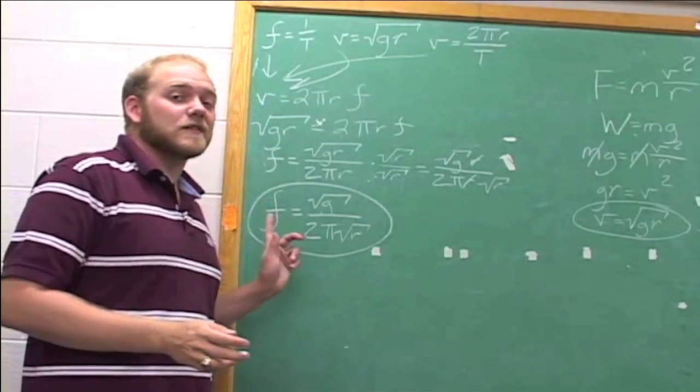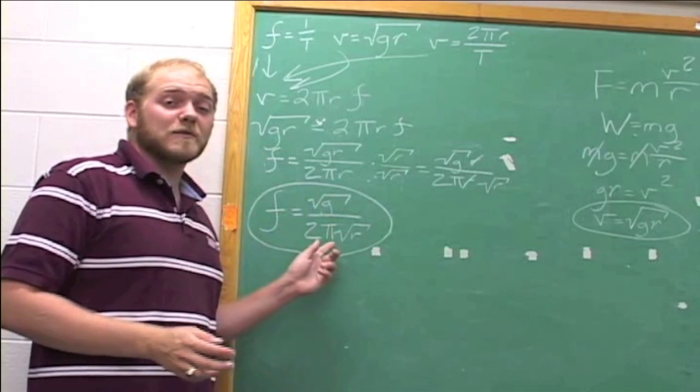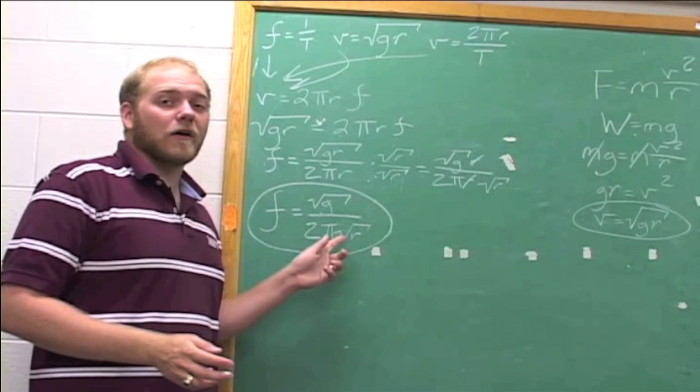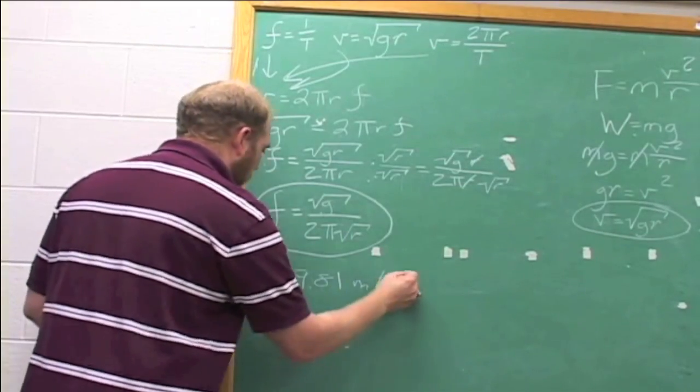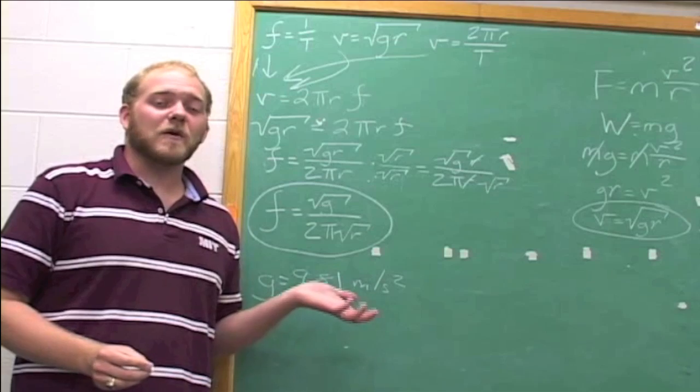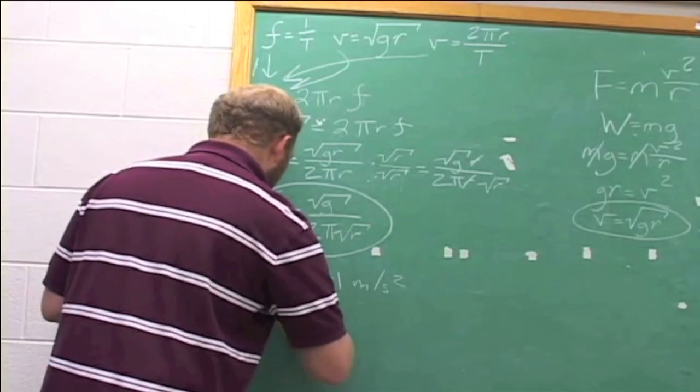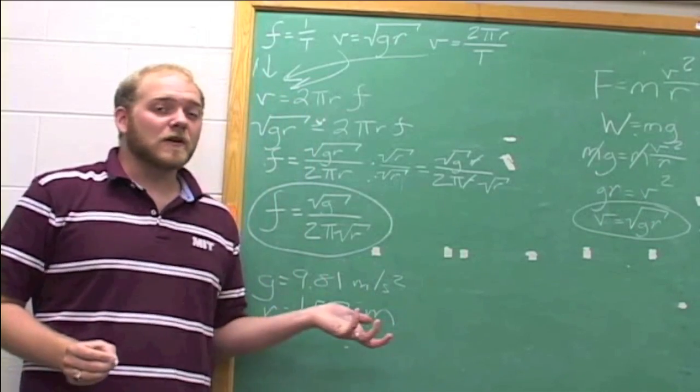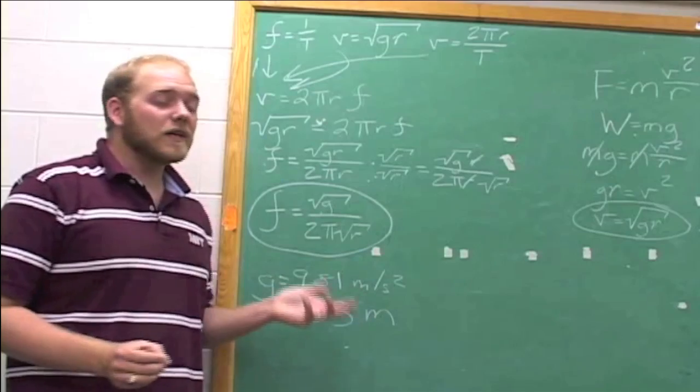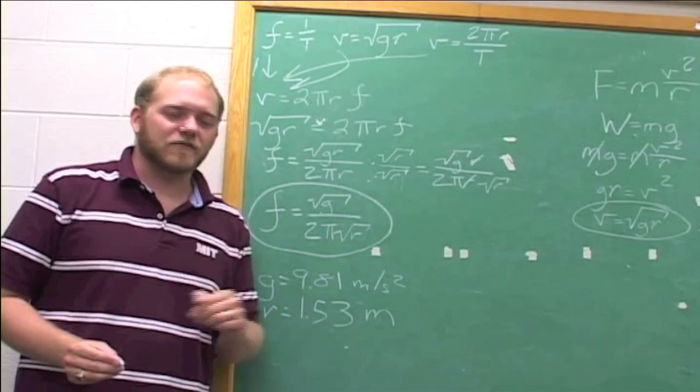We find that the centrifuge frequency is equal to the square root of g divided by 2 times pi times the square root of r. So, we know g is 9.81 meters per second squared and we know r is 1.53 meters. So, with these two values, we can solve for the value of frequency. Why don't you take a minute to solve this yourself. We'll come back with the answer in just a minute.